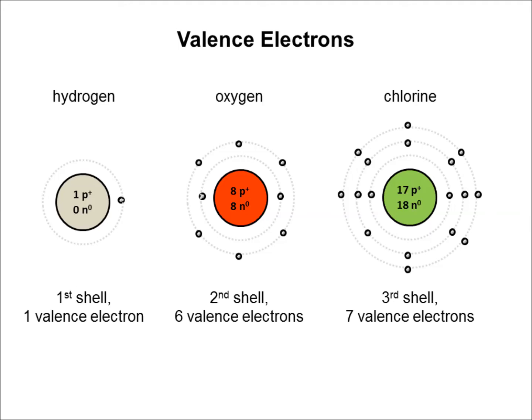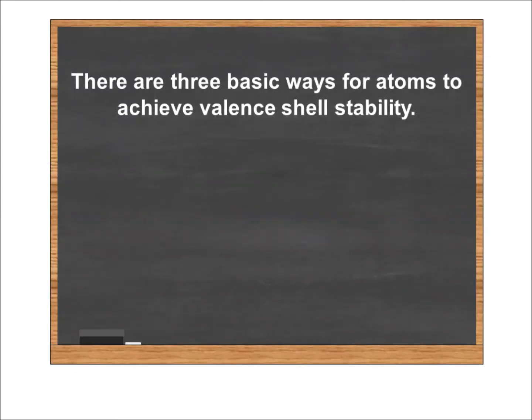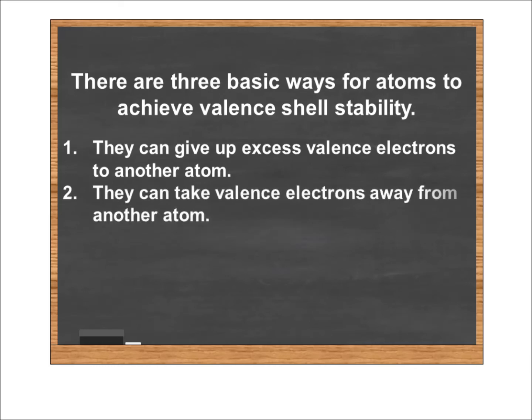Well, there's a few options. An atom can give up excess valence electrons to another atom to close out its valence shell. An atom can take valence electrons away from another atom to close out its valence shell. Or the third option is, two atoms could share their valence electrons with each other so that each has a closed valence shell part of the time. These are the three ways that atoms interact to close their valence shell. And when they interact, the result is what's called chemical bonding.